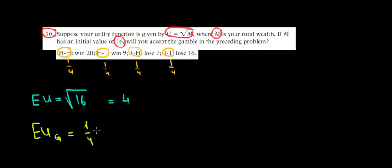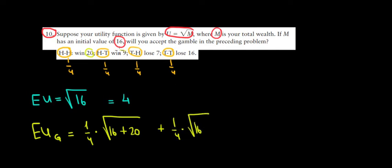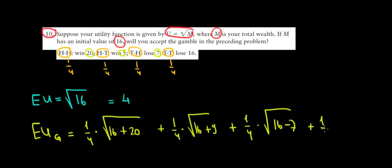So we would have a 1/4 probability of having a utility of √(16 + 20), plus a 1/4 probability of utility √(16 + 9), plus a 1/4 probability of utility √(16 − 7) because we would lose 7, and also a 1/4 probability of utility √(16 − 16).